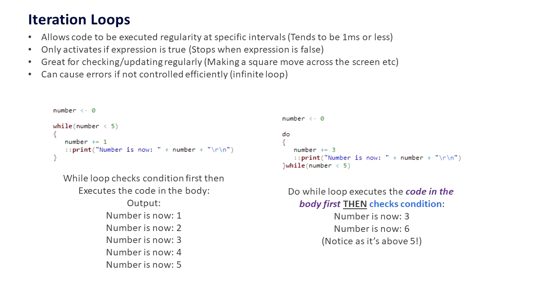Iteration loops are really important for programming as this allows a program to constantly update its values or screen but only activates if it's true and stops immediately if it's false. It's great for checking and updating regularly but it can cause issues if you don't control it, which causes an infinite loop which will decrease the chances of your application working correctly.